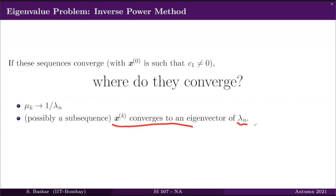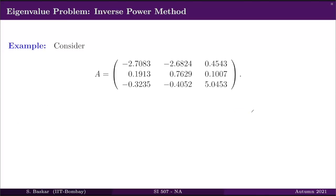Eigenvectors do not change from A to A inverse — they remain the same. Only the eigenvalues of A inverse are the inverses of the eigenvalues of A. Therefore, x_k will converge to one of the eigenvectors corresponding to lambda_n. Let us illustrate the idea of the inverse power method through an example.